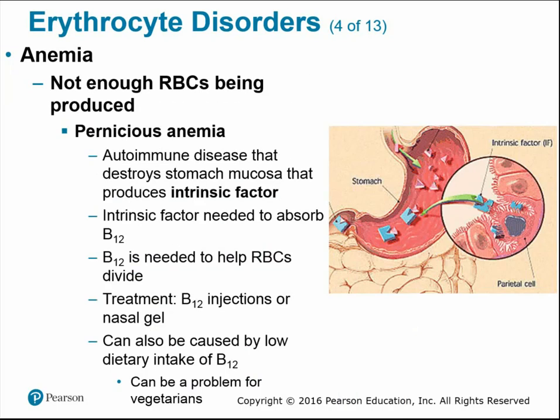Pernicious anemia is an autoimmune disease where immune cells destroy the lining of the stomach. Cells inside the stomach produce an enzyme called intrinsic factor, which is required for vitamin B12 absorption, and vitamin B12 is required for red blood cell production. It can also be caused by low dietary B12 intake — a potential problem for vegetarians. Most commonly it involves impaired intrinsic factor production, so it must be treated with B12 injections or nasal gels rather than oral supplements.